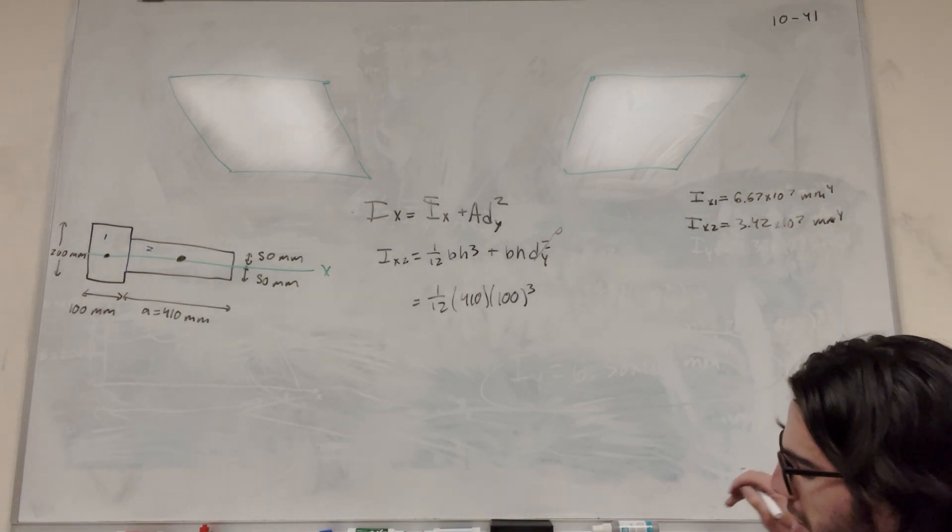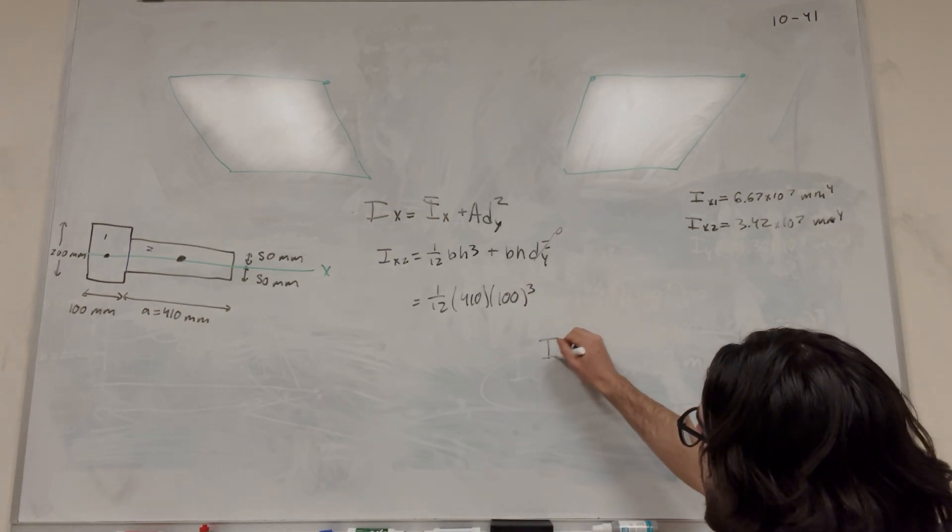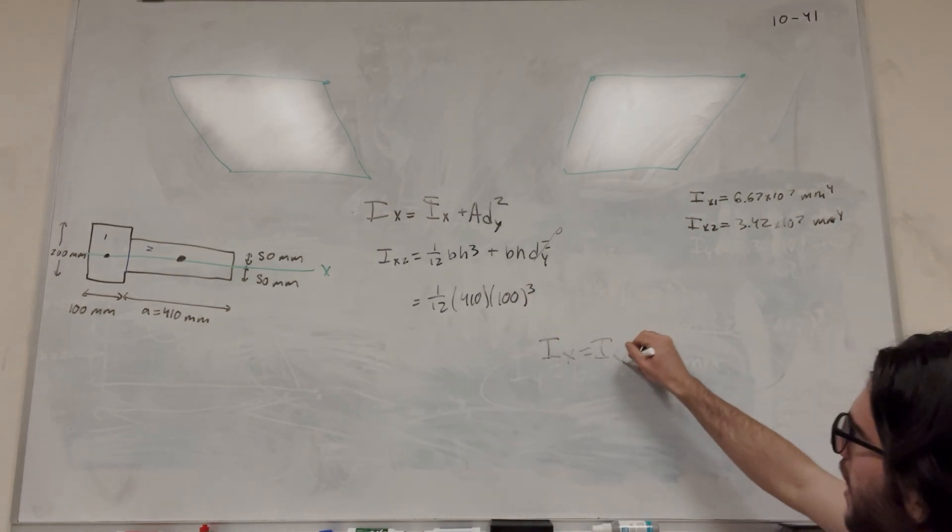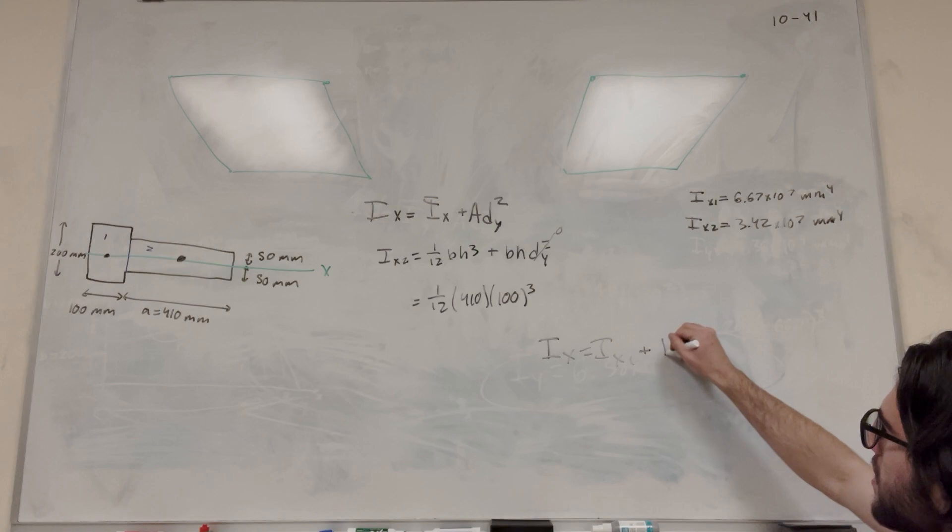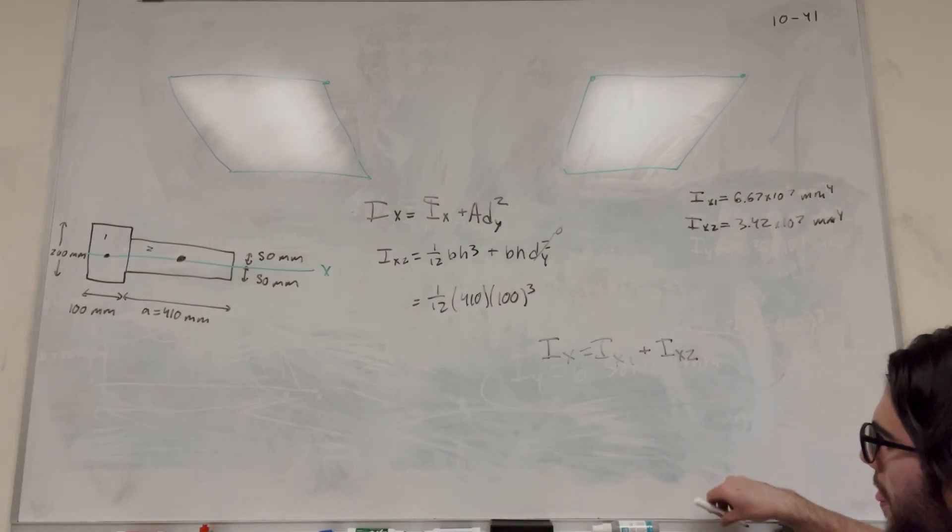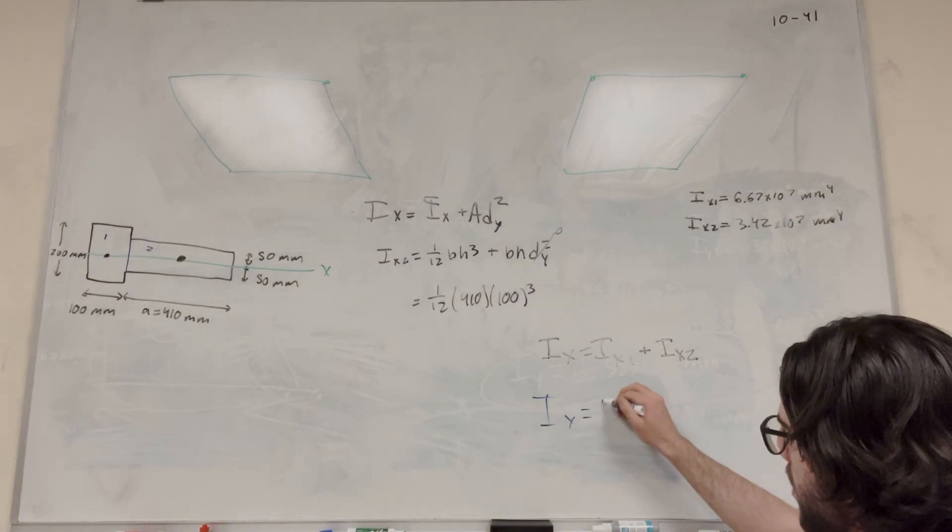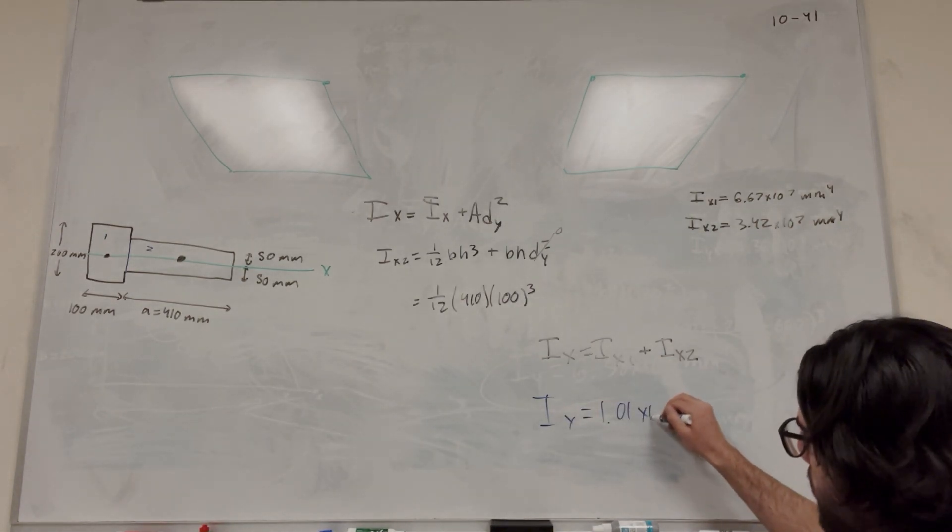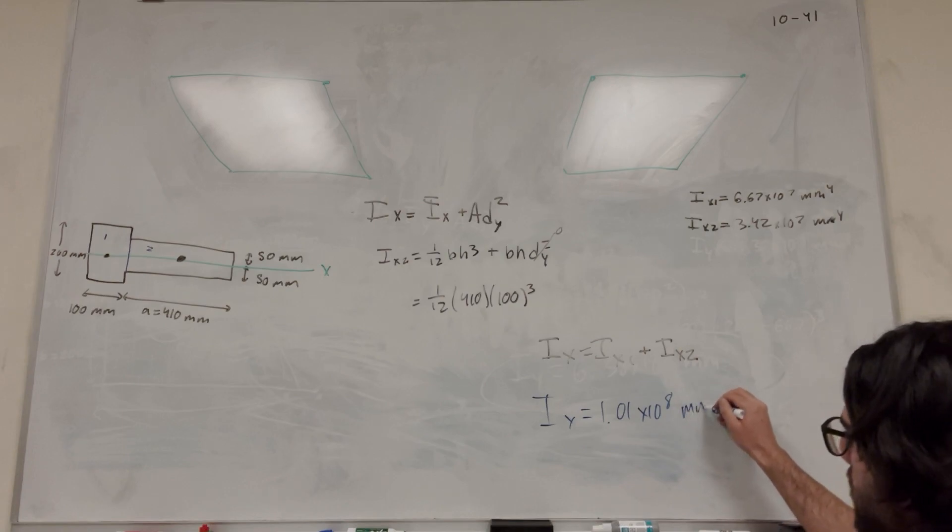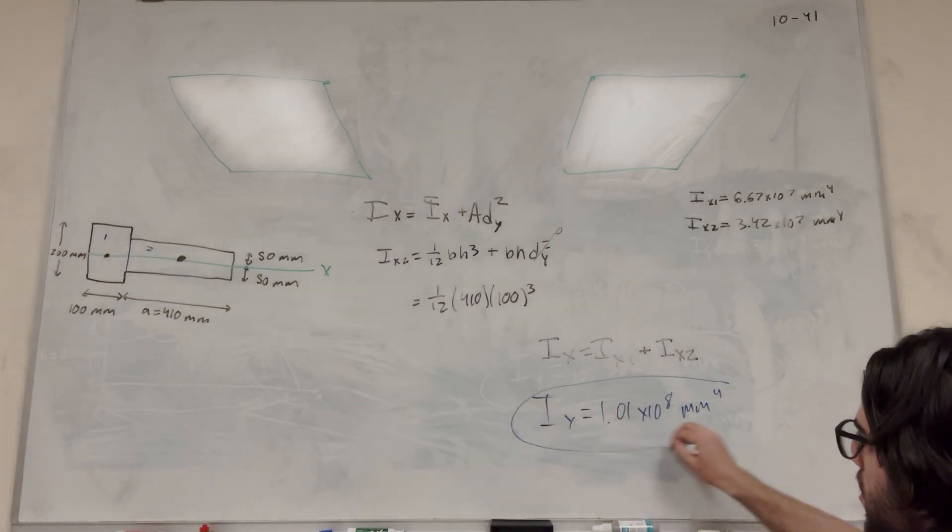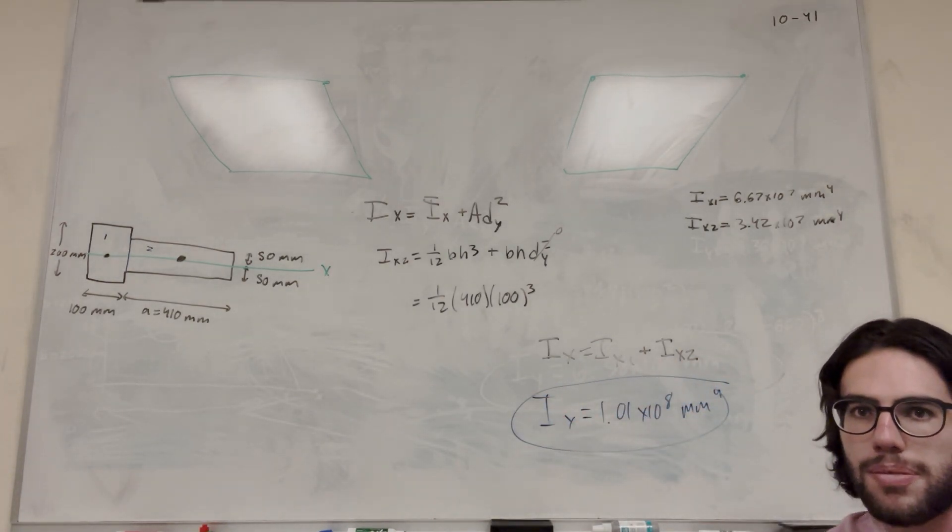Now all you have to do is add these two together, so I_x equals I_x1 plus I_x2. Your final answer: I_x equals 1.01 times 10 to the 8th millimeters to the fourth. There you go, that's your answer.